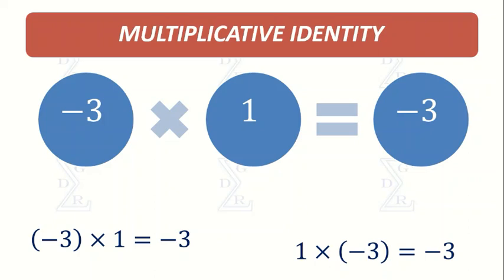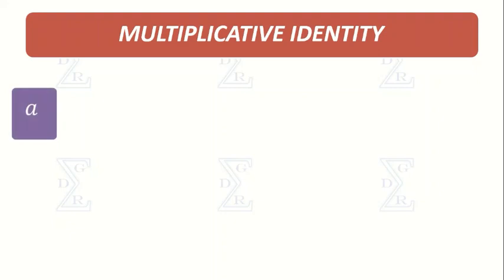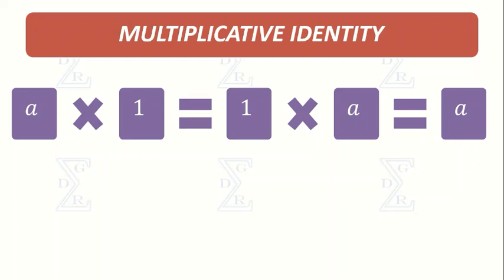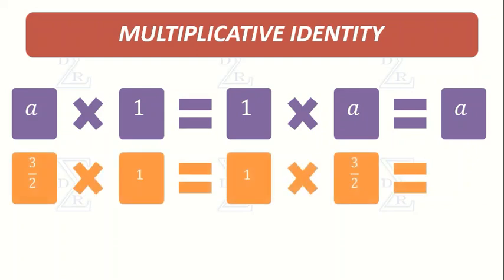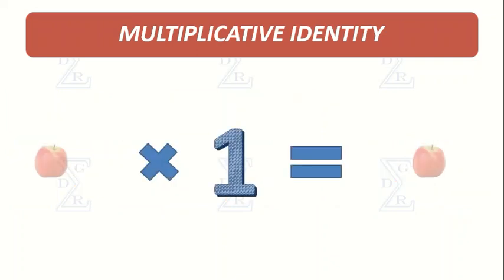So the formula for the multiplicative identity is the product of A and 1, or 1 and A, is equal to A. According to the property, the product of A and 1 is equal to A. So 1 is a multiplicative identity.